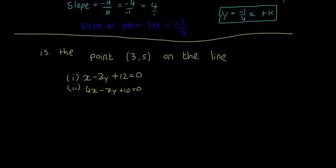The method is to substitute 3 for x and 5 for y. For the first line, x - 3y + 12 = 0 becomes 3 - 3(5) + 12 = 0.